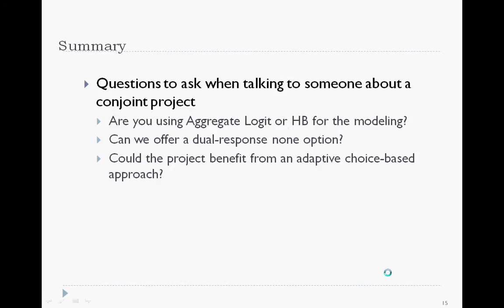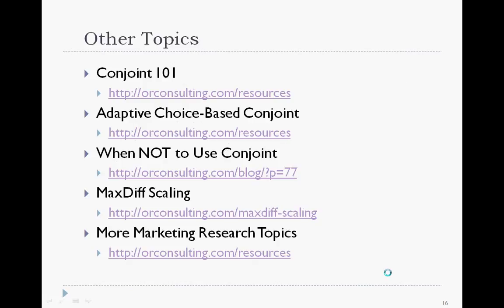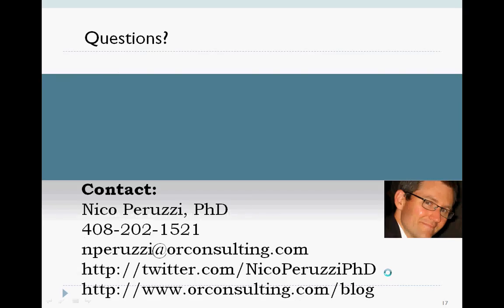This has been a lot of information in a very short amount of time, but choice-based conjoint has come a long way. When you talk to somebody about conducting a conjoint project, it's helpful to be aware of where CBC has been and where it is currently. By understanding the limitations of older techniques and seeing the latest techniques, you can be better prepared to set up a conjoint project with the best possibility of returning accurate results that will help your business's bottom line. Feel free to contact me with any questions, and you can keep up on new topics by checking my blog or following me on Twitter. Thanks very much.